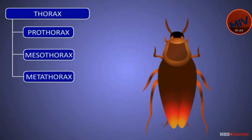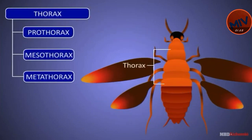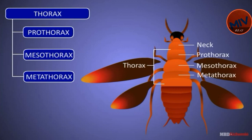Thorax: It consists of three distinct segments — the anterior prothorax, the middle mesothorax, and the posterior metathorax. Prothorax bears three pairs of walking legs; one pair is attached to each thoracic segment.